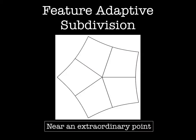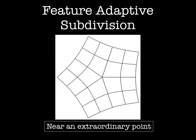Looking at the region near an extraordinary point, we see that none of the patches are B-spline patches. However, after one level of subdivision, the outer patches are B-splines and the extraordinary region is reduced. Performing another level of subdivision creates more B-spline patches and reduces the extraordinary region further. And we can continue adaptively subdividing around these features until the region is small enough to be handled analytically.